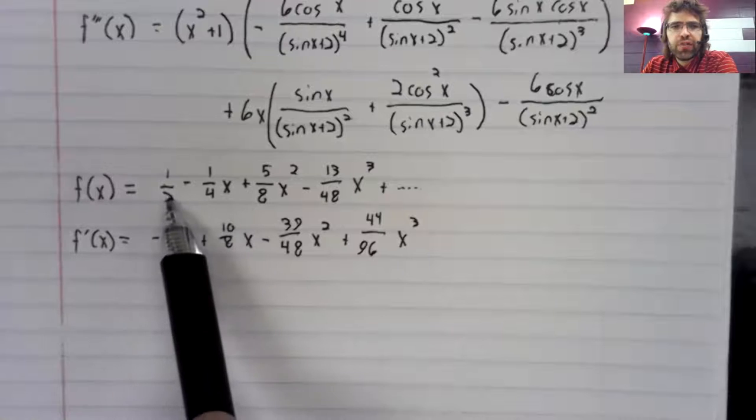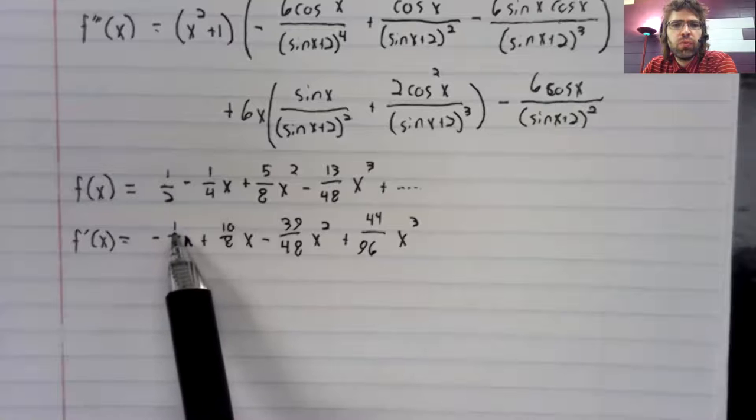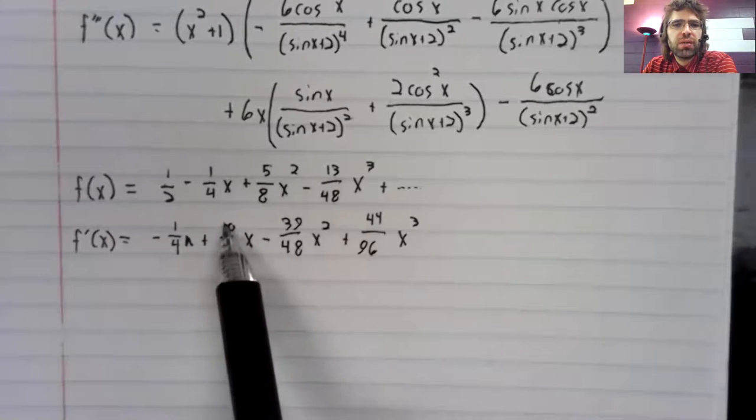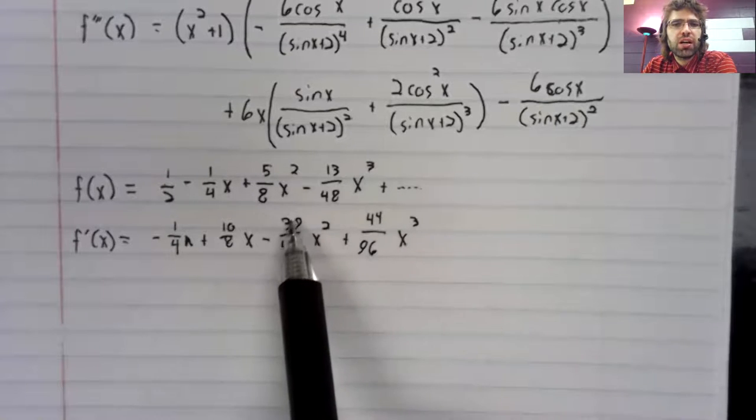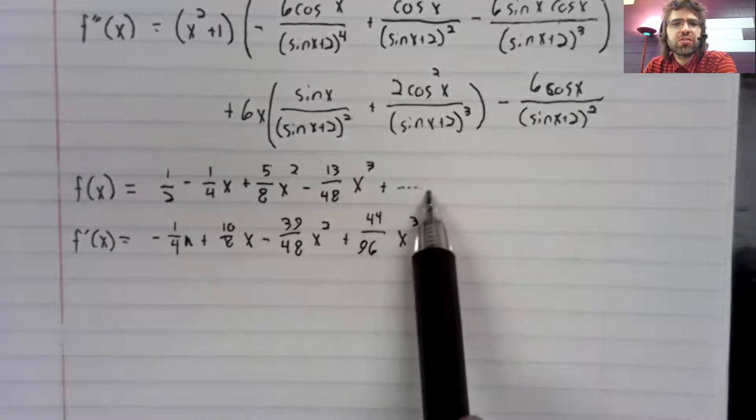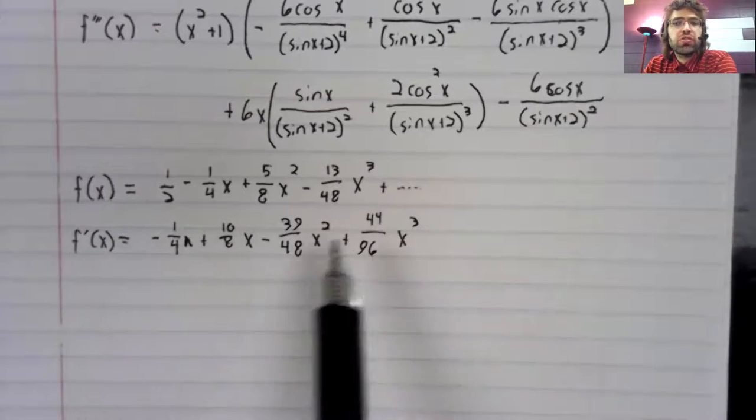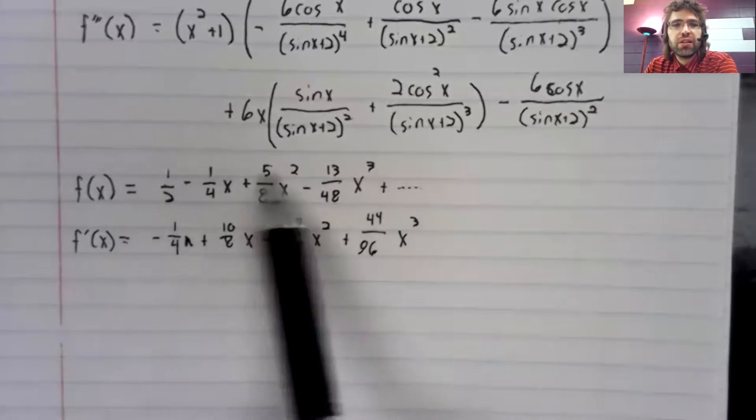The one half went away. The derivative of negative one fourth x is negative one fourth. The two comes down to become 10. The three comes down to become 39. This comes from our x to the fourth term.